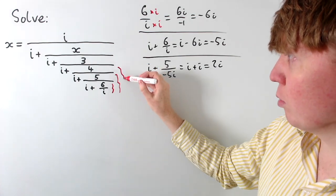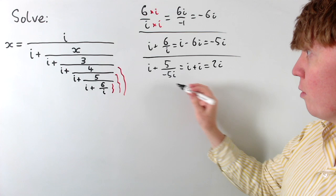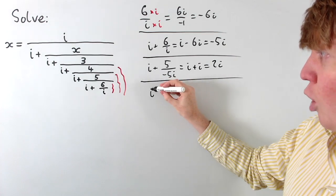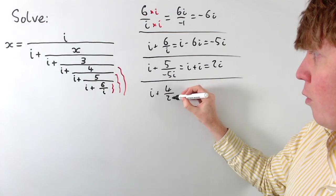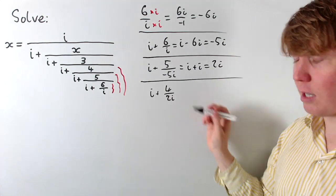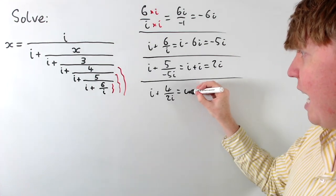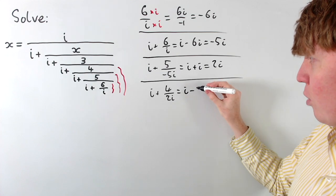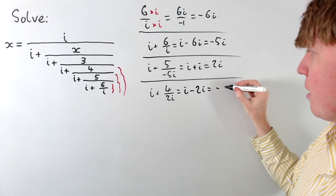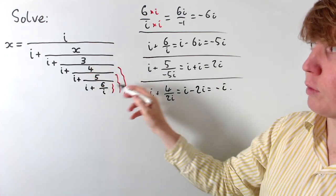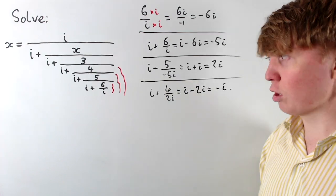So if we work upwards again, we've got i plus 4 over our previous answer, so we've got i plus 4 over 2i. So again, the 1 over i gives us a negative i, so we get i take away 4 over 2 gives us 2 times i, so then we just get negative i for all of this expression underneath the 3.